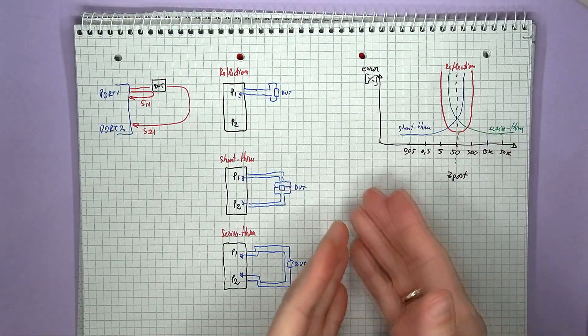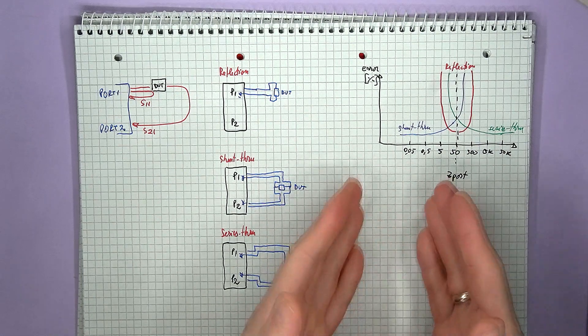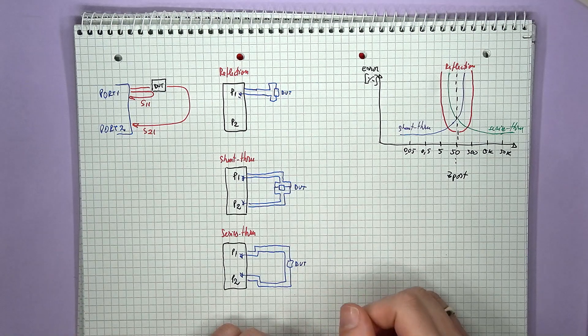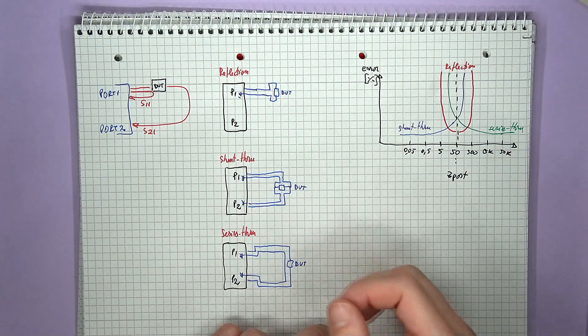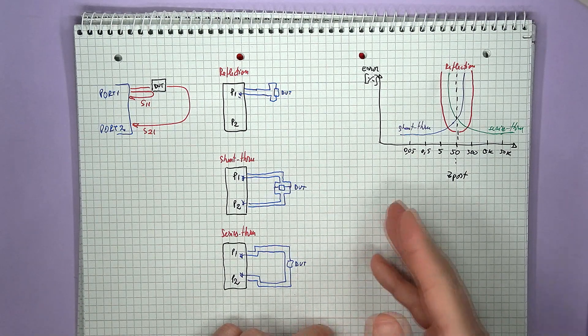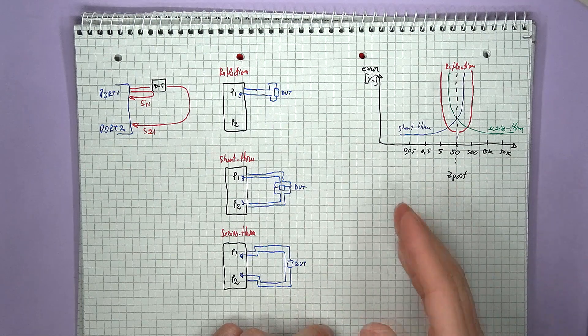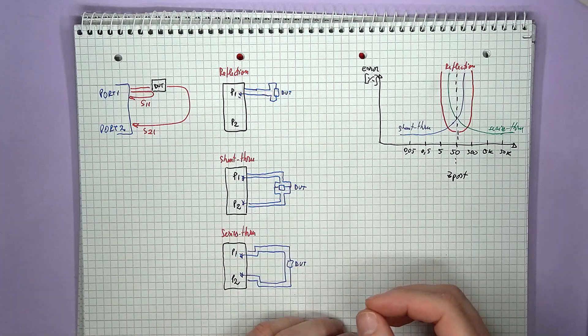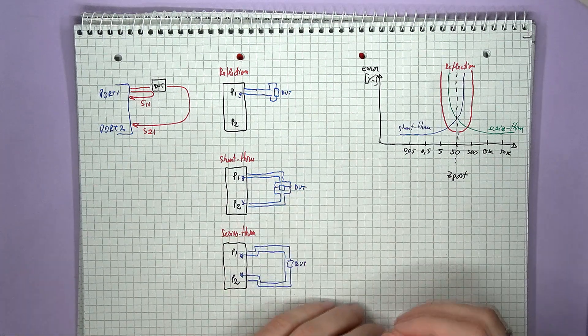The next range, say low values, equal to or lower than 50 ohms, are best covered by the shunt through method. So this technique will give good results even going down into the milliohm range. And it's commonly used when analyzing low impedance structures, like power distribution networks, or decouplings for various circuit boards.